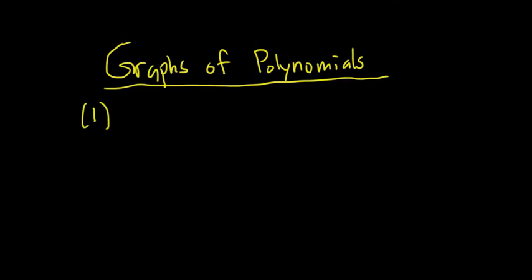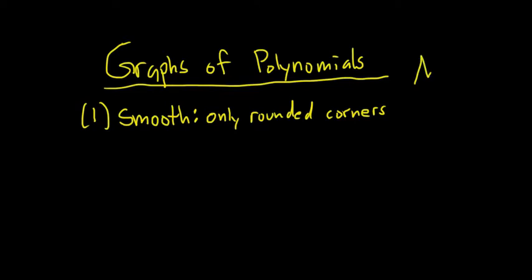The first is that they are what's called smooth. Graphs of polynomials are smooth. This means that they only have rounded corners. You can't have sharp jagged edges, stuff like that. That's no good. That could not be the graph of a polynomial. Nice rounded corners.